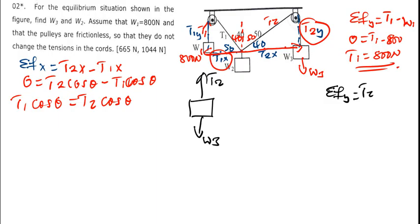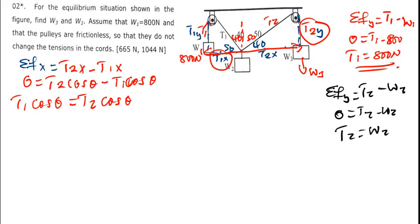We have T2 and we have W3 there. So T2 is pointing upward minus W2. So it will be zero being equal to T2 minus W2. So T2 would be equal to W2. So if I find T2 that was going to be my W2.